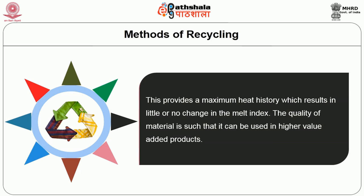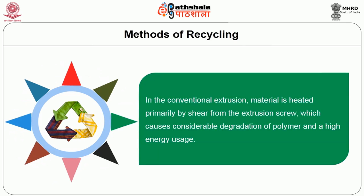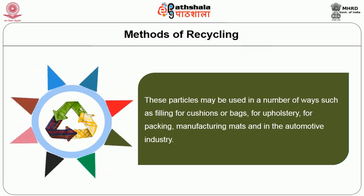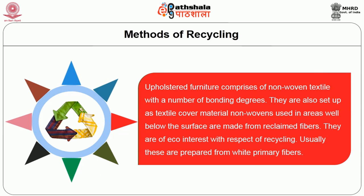In conventional extrusion, material is heated primarily by shear from the extrusion screw, which causes considerable degradation of polymer and high energy usage. The resulting particles may be used in a number of ways: as filling for cushions or bags, for upholstery, for packing, manufacturing mats, and in the automotive industry. Upholstered furniture comprises non-woven textiles with various bonding degrees; non-wovens used in areas well below the surface are made from reclaimed fibers and are of eco-interest with respect to recycling.